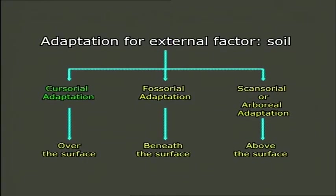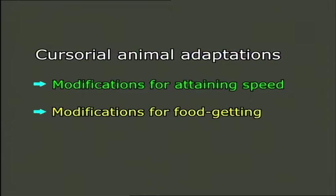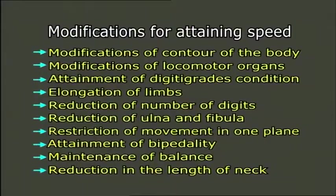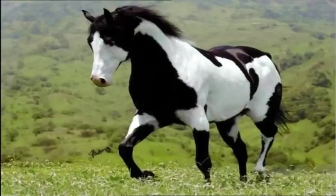Let us first discuss the cursorial adaptations of soil animals in detail. These animals show different modifications for speed attainment and getting food. Cursorial adaptation signifies modifications for attaining speed on the hard surface of the earth. The main aim is to offer least resistance in the attainment of speed. Modifications of contour of the body: the animals are devoid of extra projections which may offer resistance. The body of cursorial animals is streamlined and spindle-shaped, as seen in the horse.